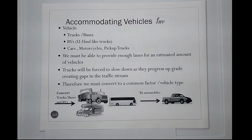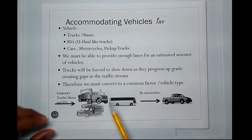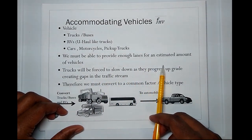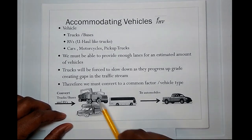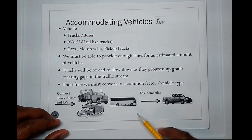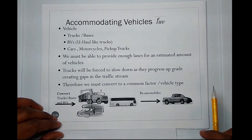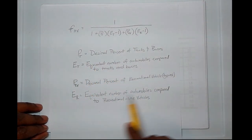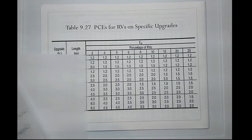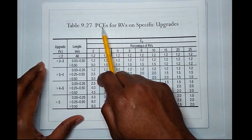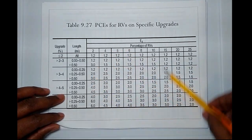As a quick recap: we want to represent all vehicles on the road in one single type of unit and provide enough lanes for all of those units. Because trucks slow down on upgrades, they create gaps in the stream. We need to understand what those gaps mean in terms of moving large amounts of vehicles. The way to do that is to convert everything into one single unit — a passenger car or automobile — using the heavy vehicle factor equation with the correct variables and tables.